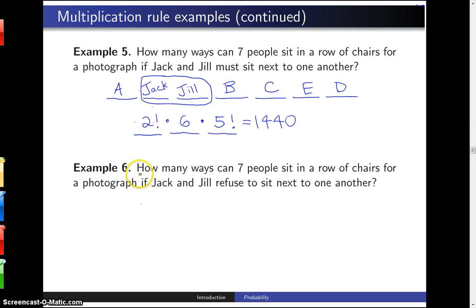If the question simply asked how many ways are there for seven people to sit in a row of chairs, with no reference to Jack and Jill, the answer would be there are seven factorial different ways for them to sit.